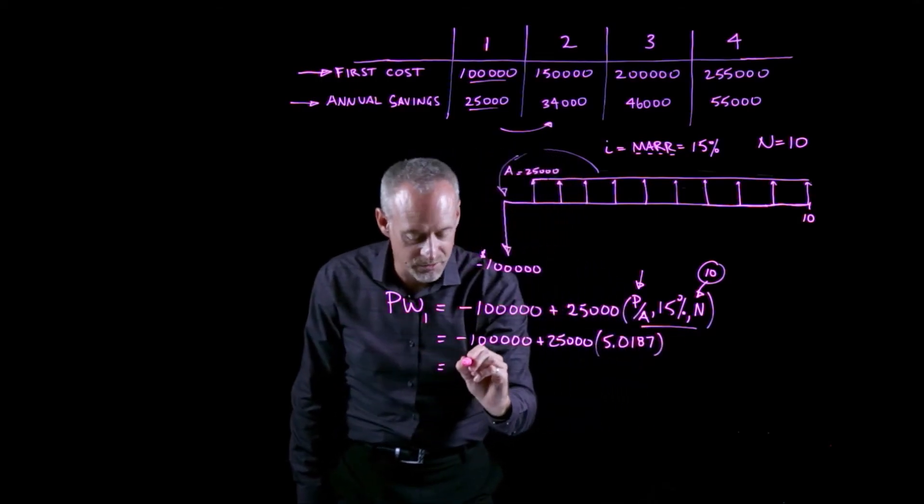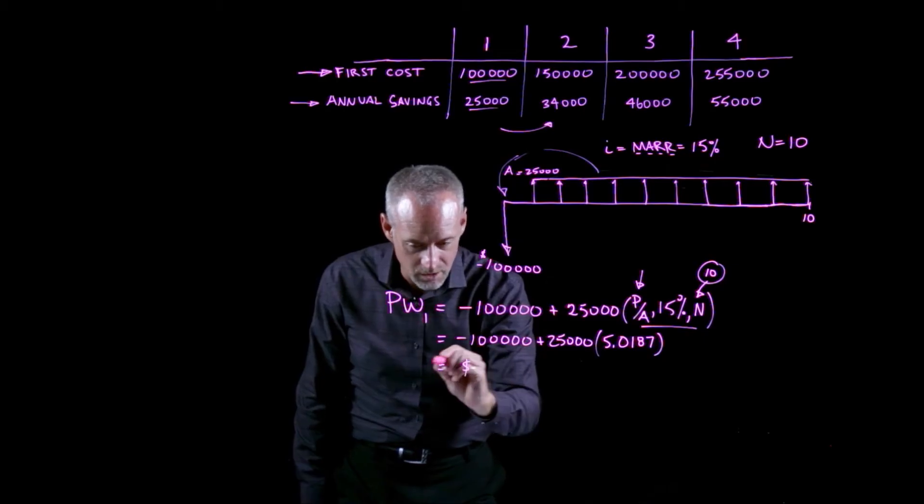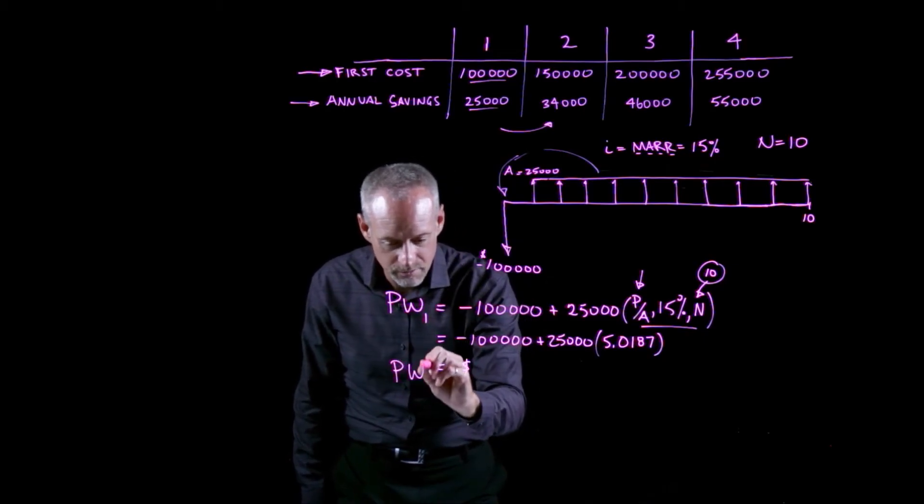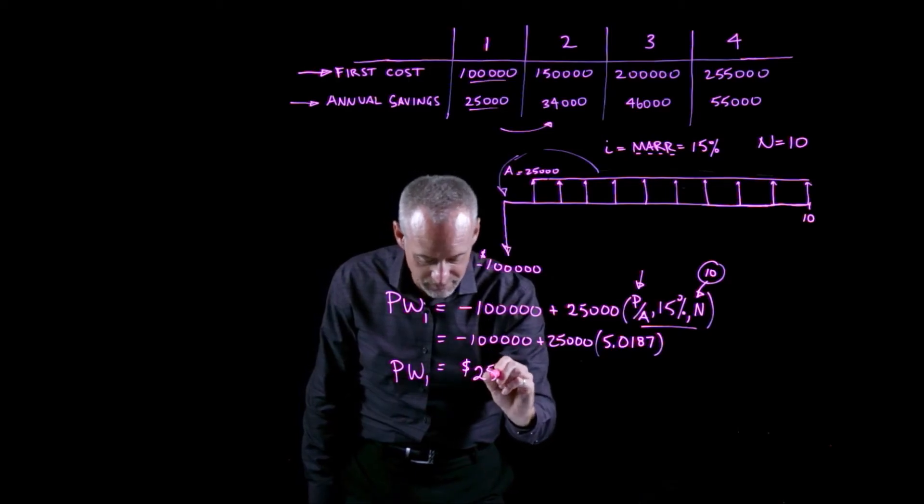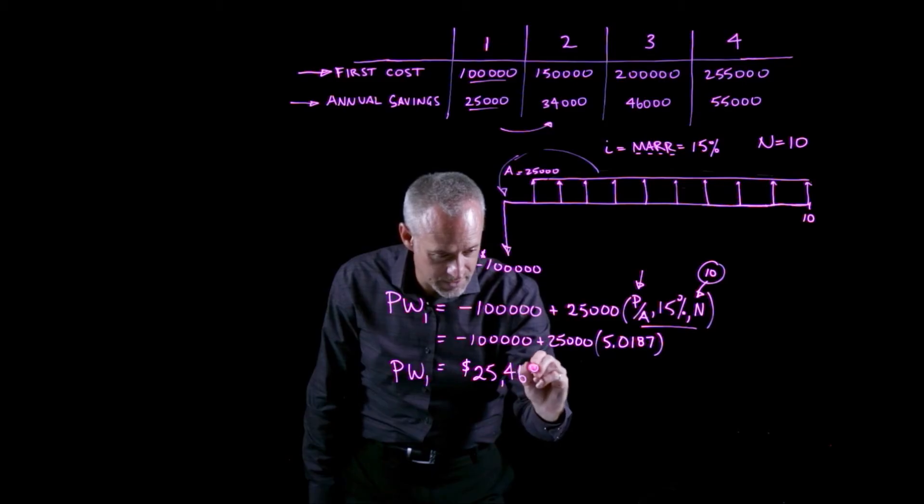And if we proceed with the calculations of this, we end up with a present worth for project one of $25,468.